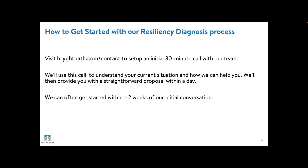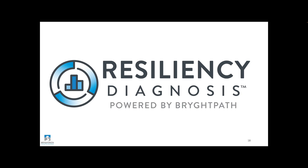So how can you get started? The first thing is to set up a conversation. Visit brightpath.com/contact to set up an initial 30-minute call with our team. We'll use this time to understand your current situation and how we may be able to help you. If we think there's a good fit, we can provide you a straightforward proposal for the resiliency diagnosis within a day, and we can often get started within one to two weeks of our initial conversation. We hope to hear from you.